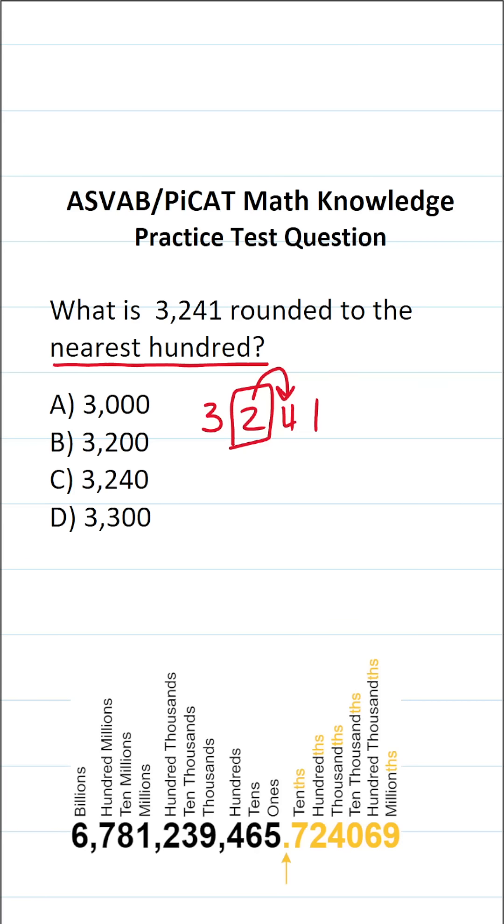So in this case, the number to the right is 4. So this is going to round to 3,200. Again, we zero these out because we're rounding to the nearest hundreds place.